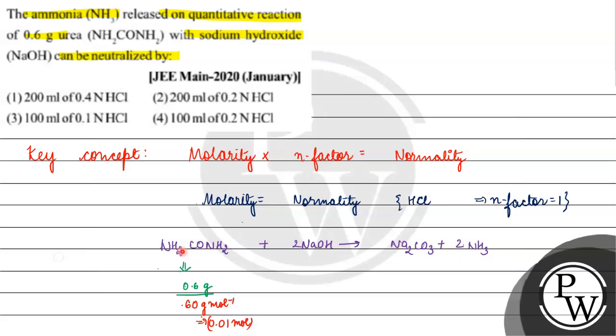If we look stoichiometrically, 1 mol urea produces 2 mol ammonia. So if we have 0.01 mol urea, then 0.02 mols of ammonia will be produced.